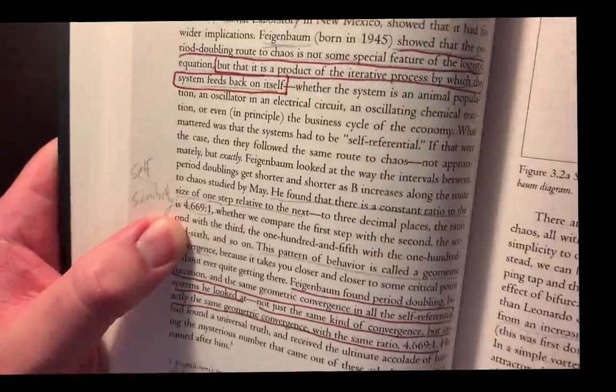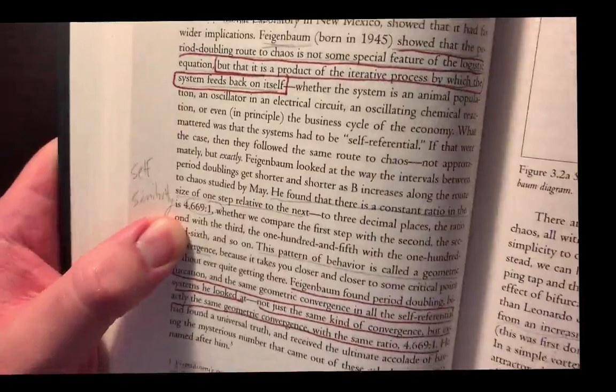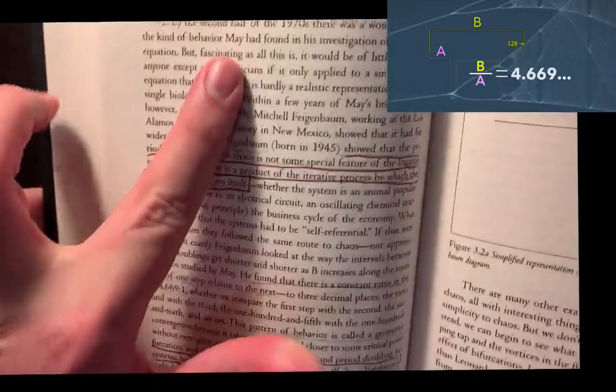They both talk about the Feigenbaum coefficient, the 4.6691, what Feigenbaum looked at when he's looking at the variables, about the May equation, which is the original equation here coined by Robert May.